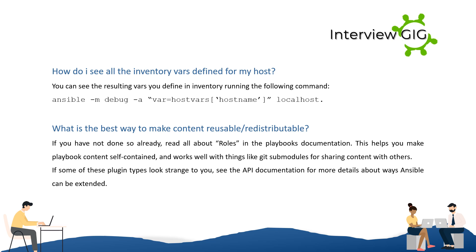How do I see all the inventory vars defined for my host? You can see the resulting vars defined in inventory by running: ansible -m debug -a "var=hostvars[hostname]" localhost. What is the best way to make content reusable and redistributable? If you have not done so already, read all about roles in the playbooks documentation. This helps you make playbook content self-contained and works well with things like git submodules for sharing content with others. If some of these plugin types look strange to you, see the API documentation for more details about ways Ansible can be extended.